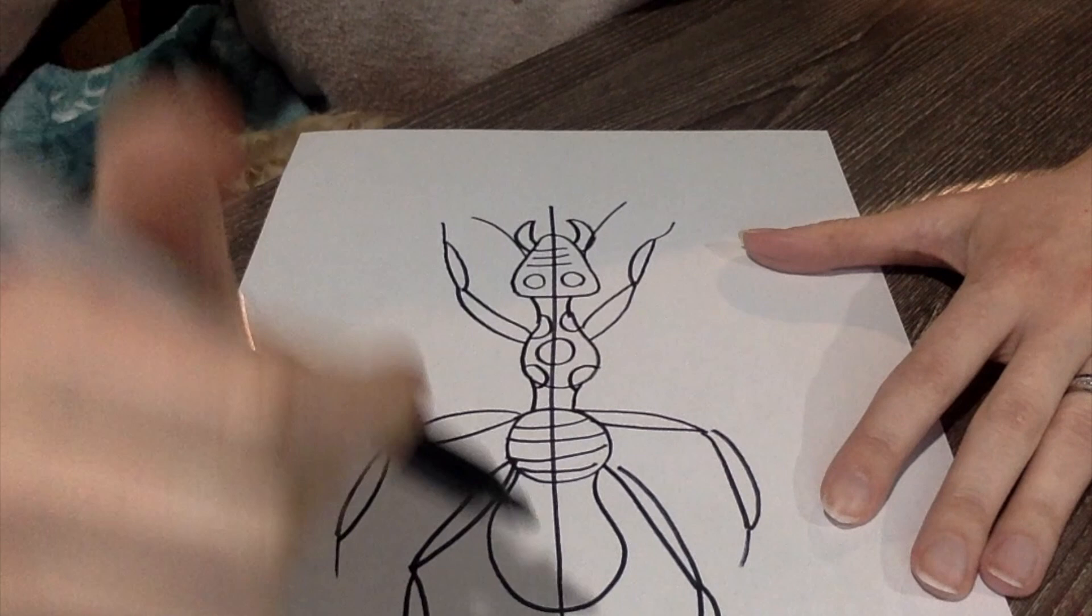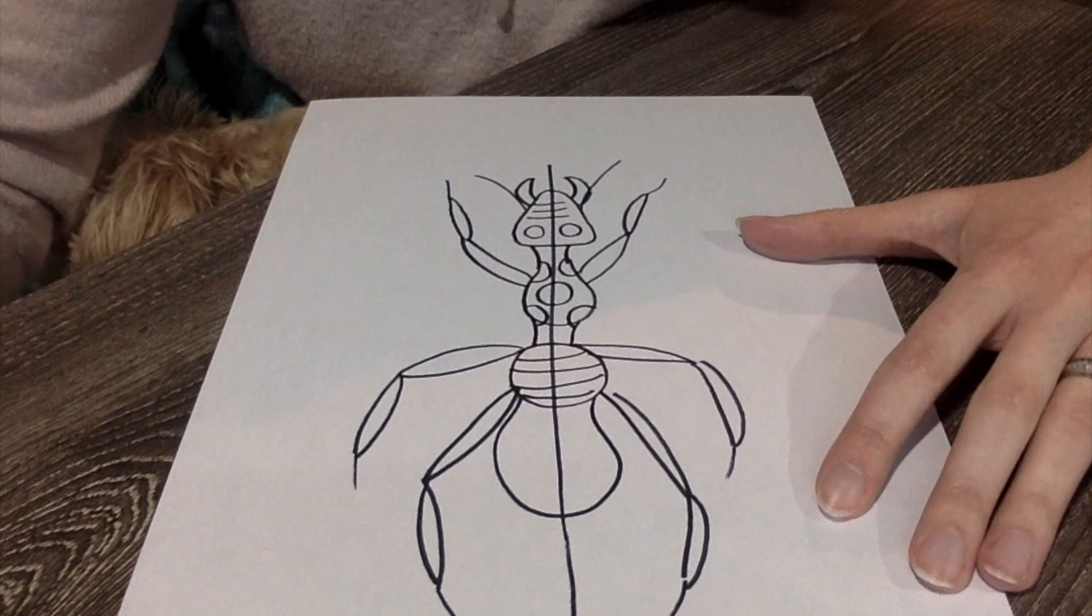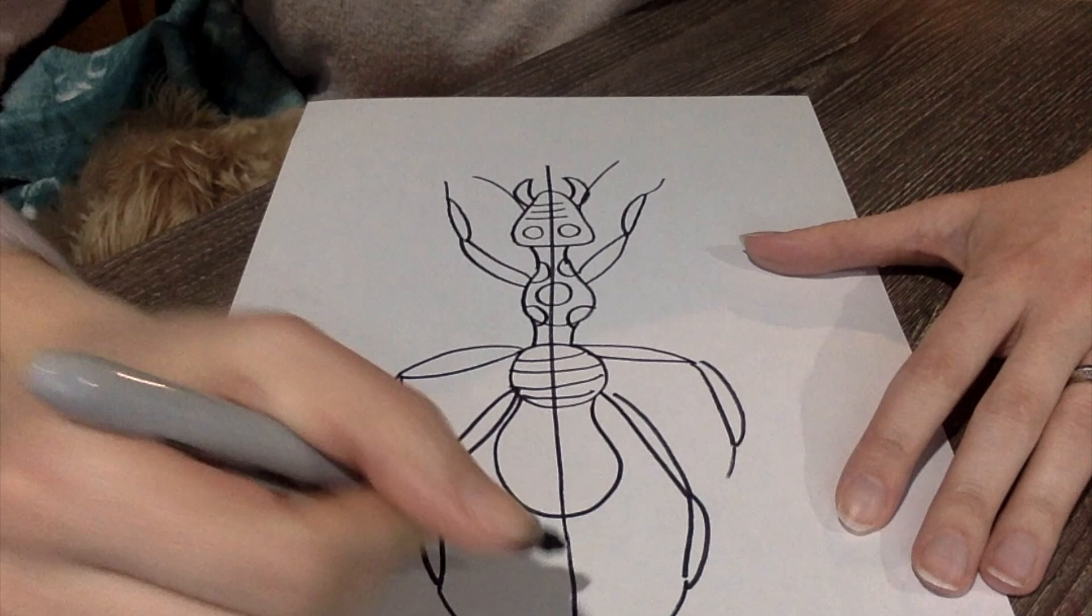Now for our background, I'm just going to give this guy some grass to play in. Now we want the background to have asymmetry, meaning it doesn't matter that it's even on both sides.